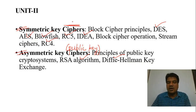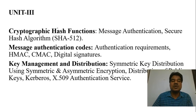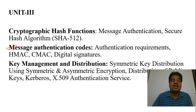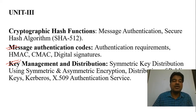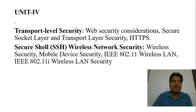In the third unit, we will discuss hash functions — what a hash function is and how it helps in message authentication. We will see message authentication codes like HMAC and CMAC, as well as digital signatures. Key management and distribution will also be covered: the principles of authenticity needed when performing key distribution, both for symmetric and asymmetric keys.